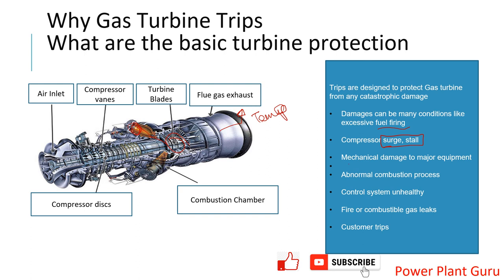The next concern is mechanical damage to major equipment. Let's say you are operating a gas turbine and the lube oil pump for bearing lubrication starts delivering low pressure day by day, and your lube oil header pressure keeps decreasing. Do you want to continue gas turbine operation with reduced lube oil pressure? Definitely not, because bearing lubrication will be decaying over time and the heat extracted from the bearings will also be reduced. So lube oil pressure low trip and bearing high temperature trip are there to prevent such mechanical failures.